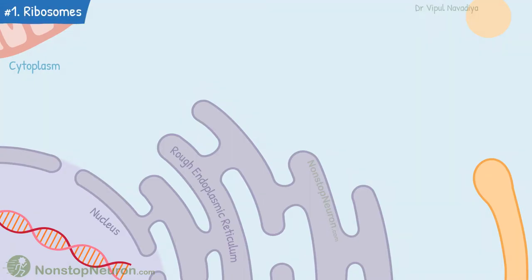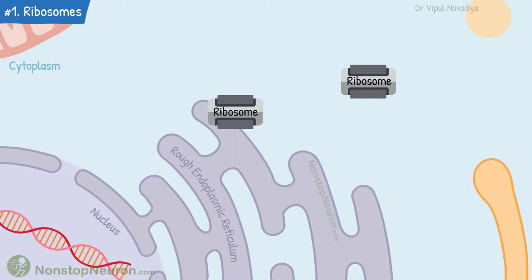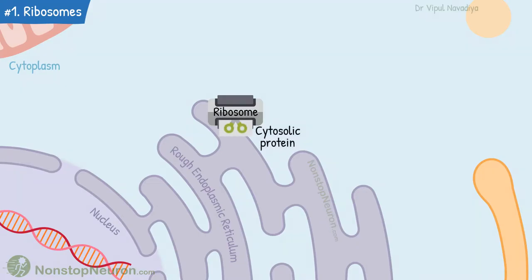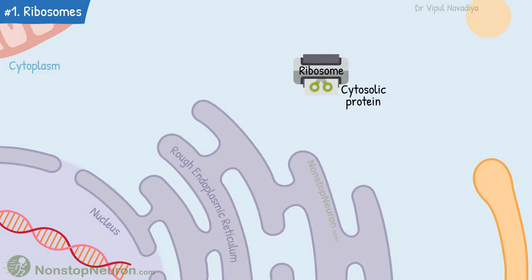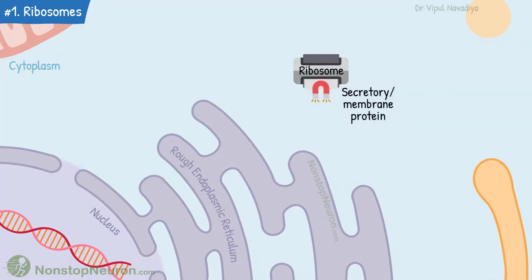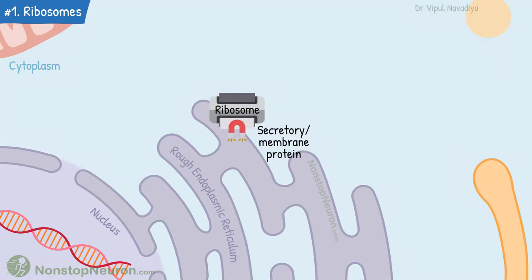The first point is regarding ribosomes. They are found in the cytosol as well as on the rough endoplasmic reticulum. Both these ribosomes are biochemically identical and are in equilibrium. When a ribosome starts synthesizing cytosolic protein, it diffuses away from the endoplasmic reticulum. The synthesis is then completed in cytosol. And when it is synthesizing a protein that is to be secreted or a membrane protein, it gets attached to the endoplasmic reticulum.